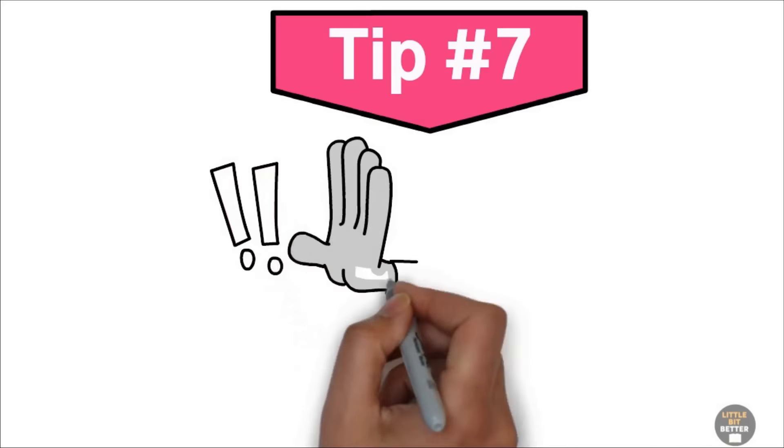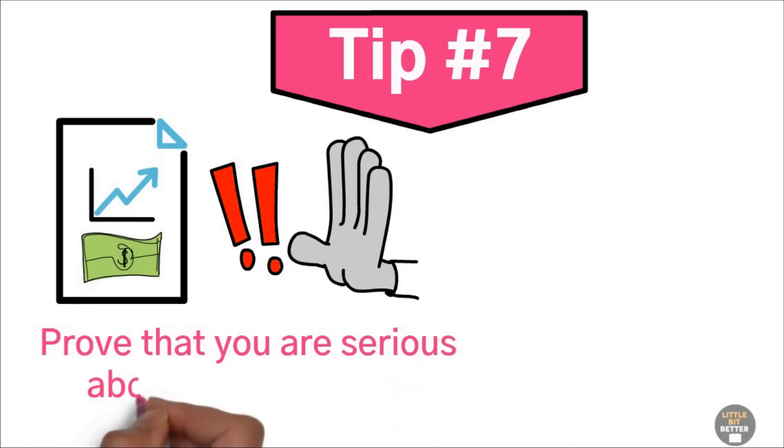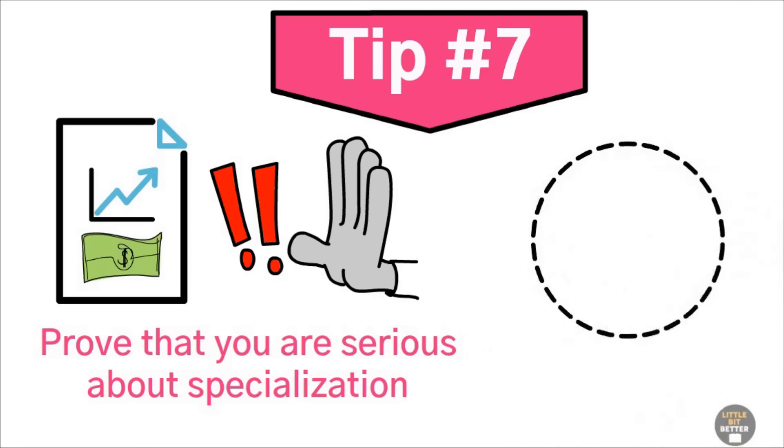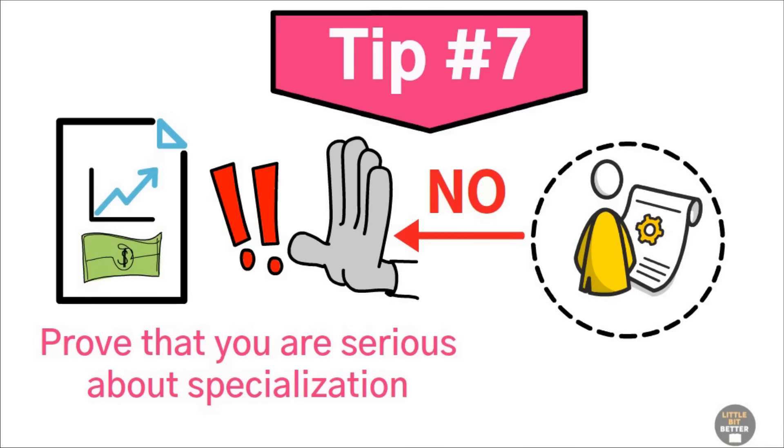To recap tip number seven, don't be afraid to say no to other projects, even if it's very profitable. Prove that you are serious about specialization by turning down work that falls outside your area of expertise. The more you say no to people, the more you'll get referred to those who truly need your product or service.